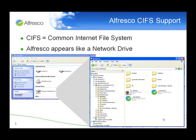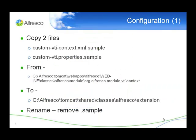You can try this for yourselves. You can download an evaluation version of Alfresco Enterprise Edition from our website and get it up and running in about five minutes. There are a couple of things you need to do to configure the CIFS server. We've included two sample files: custom VTIContext.xml and custom VTIProperties. You can find them at the link shown, and you just need to copy those to a different area within the Alfresco hierarchy and then rename them to remove the .sample extension.